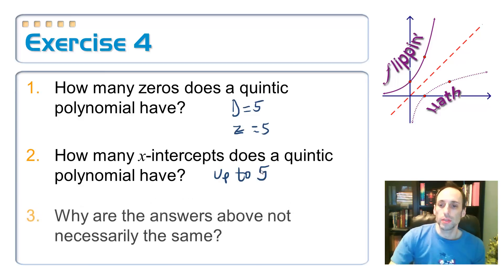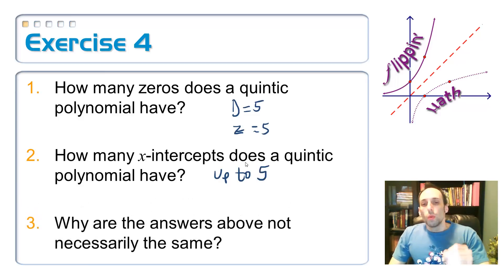And then the last one, why aren't these answers the same? And this is what we were just looking at in some of those pictures. Sometimes they repeat, and when they repeat, sometimes they just kind of dip down to the x-axis, or maybe they pass through and jag a little bit. Or they're not going to touch the x-axis at all if those zeros are imaginary.